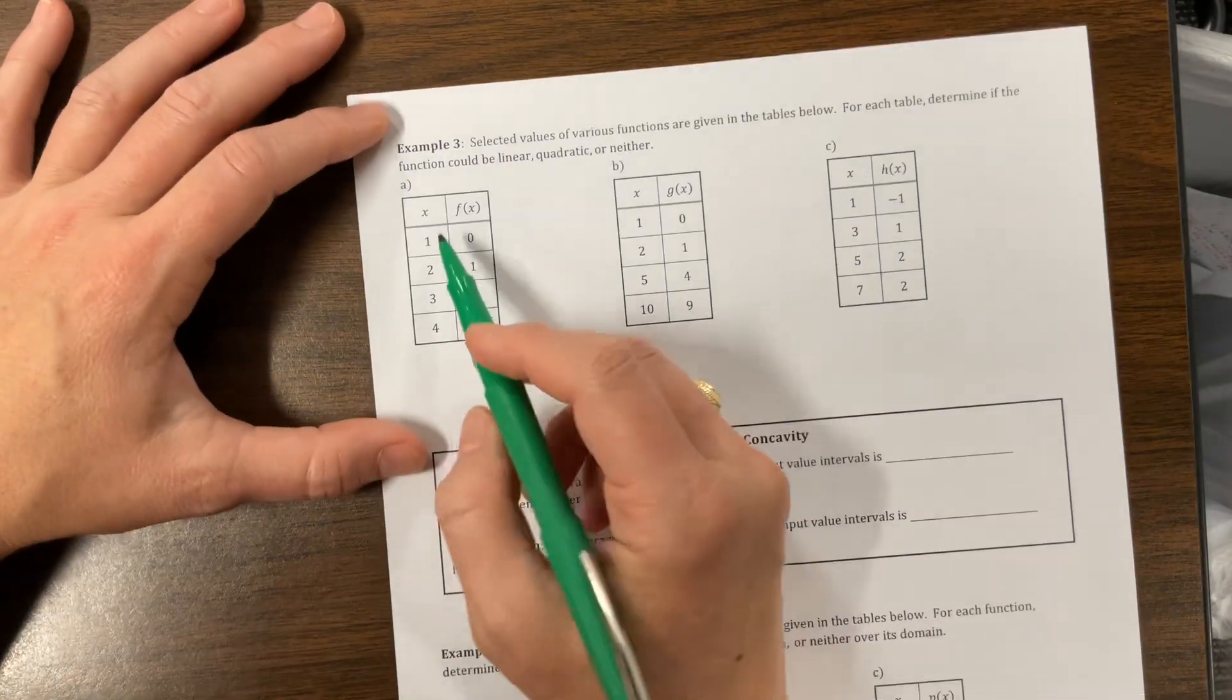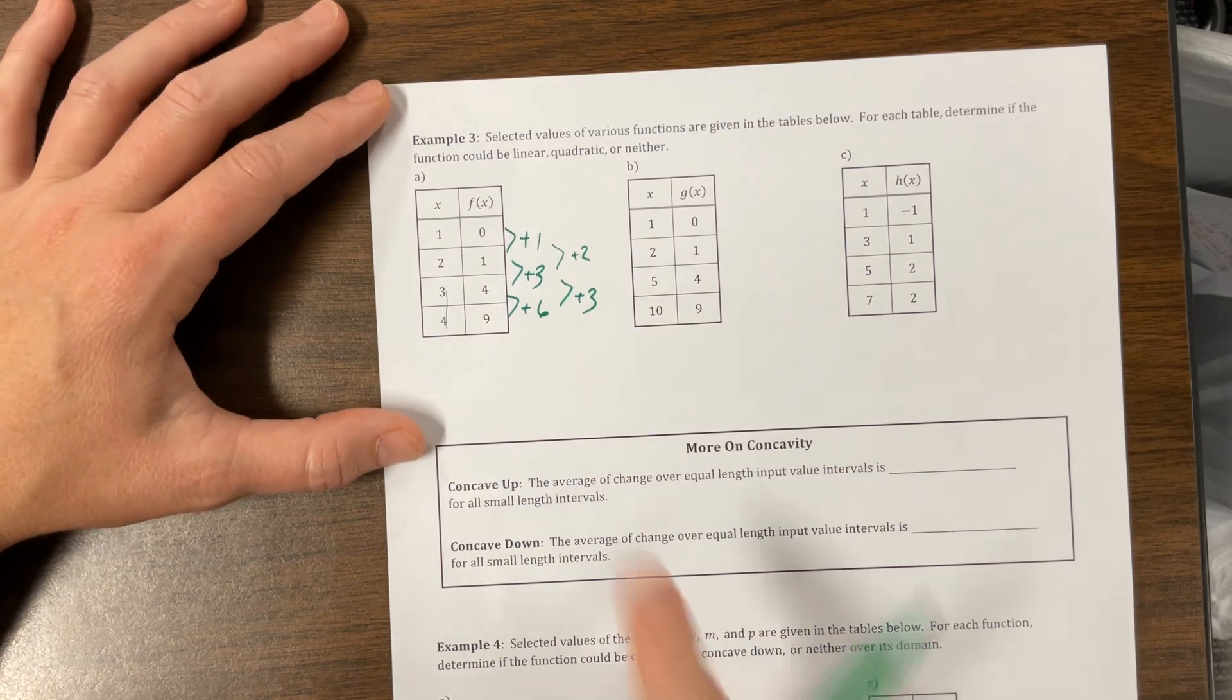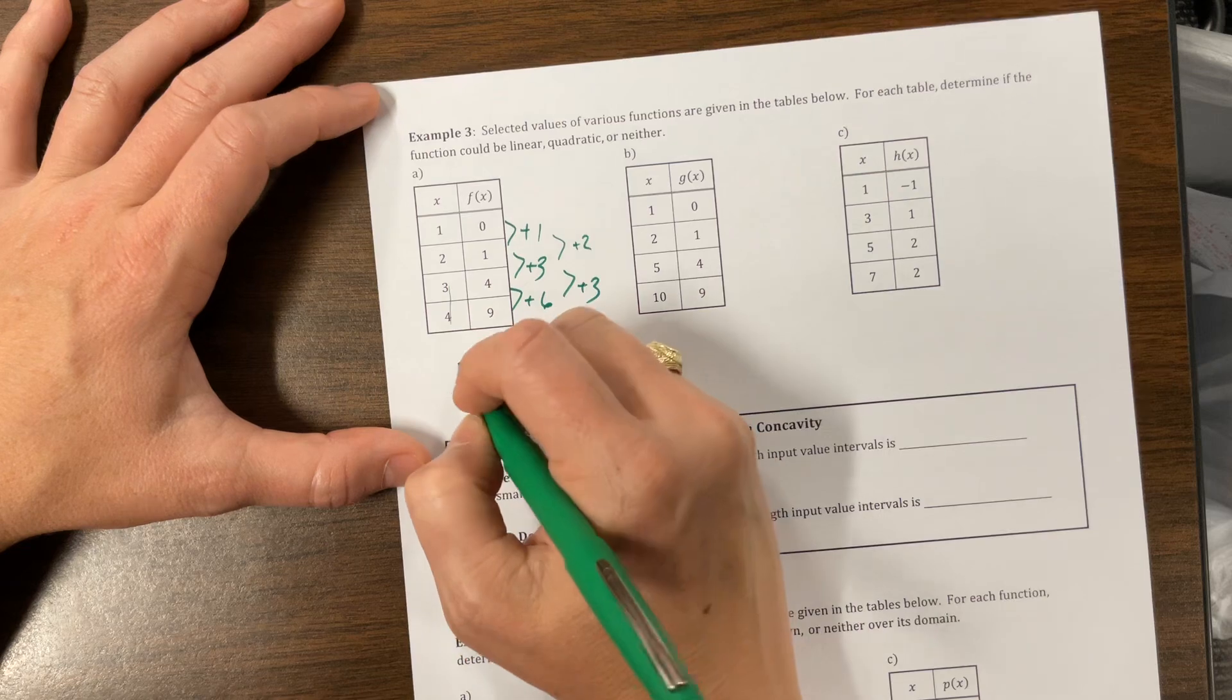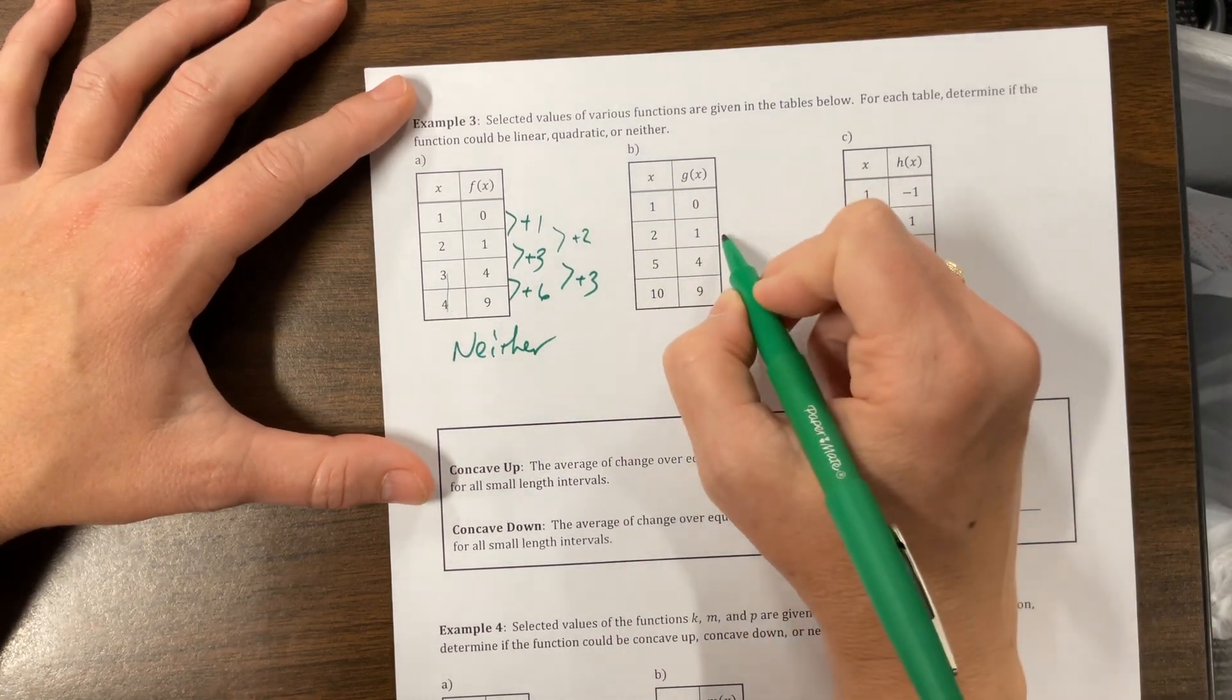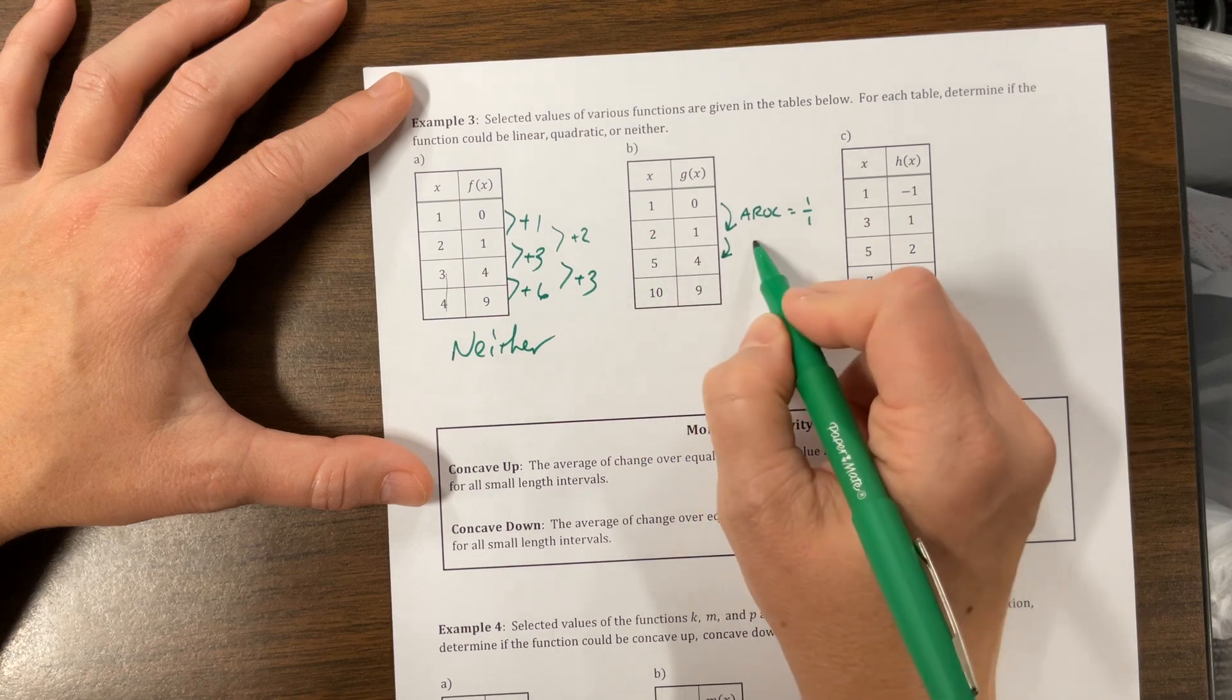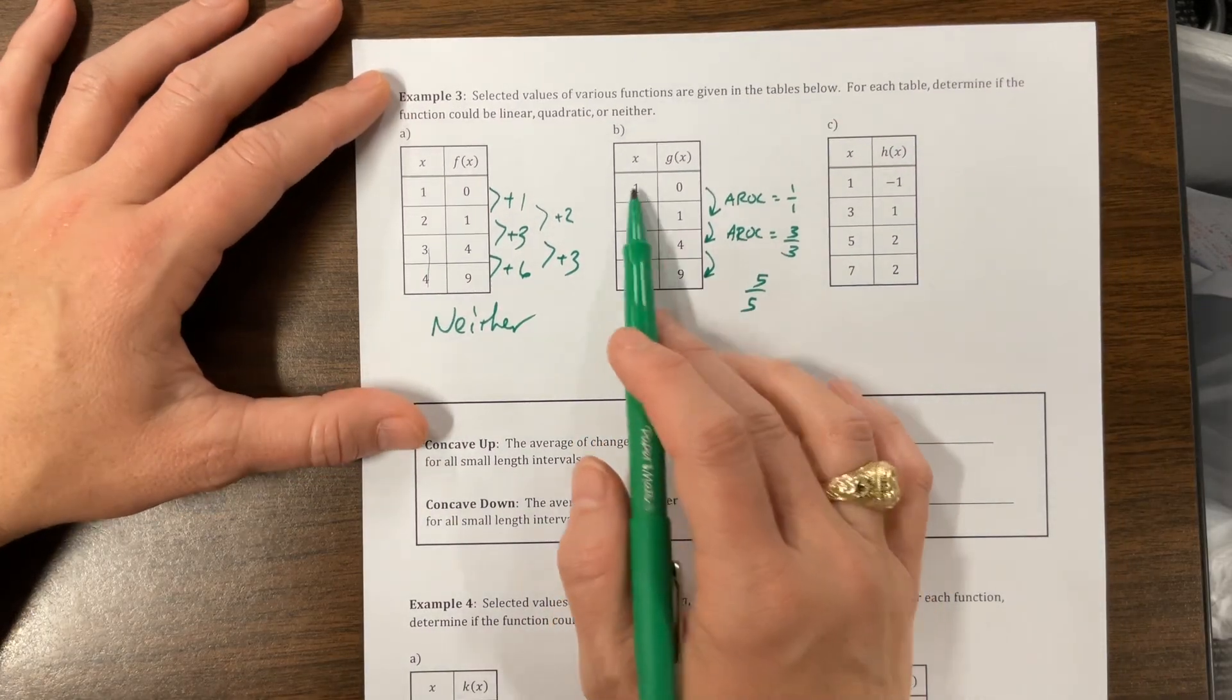Notice 1, 2, 3, 4, my x values are all equally spaced. What did I do? I added 1, I added 3, I added 6. This one I added 2, and now I added 3. So if my rate of change was constant, it would be linear. If my rate of change was changing at a constant rate, so if this second level here was constant, it would have been quadratic. It is not. So on this one, we will say either. Right here, we have 1, 2, 5, 10. Average rate of change is going to be 1 over 1. From here to here, we have 3 over 3 which is equal to 1. From here to here, I have 5 over 5 which is also equal to 1. So we had the same average rate of change.